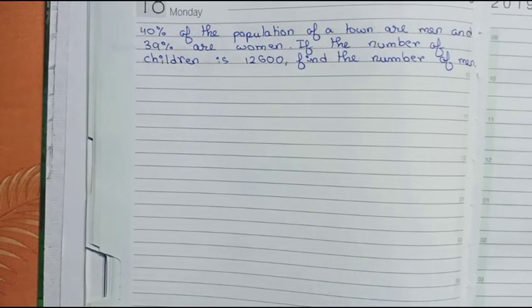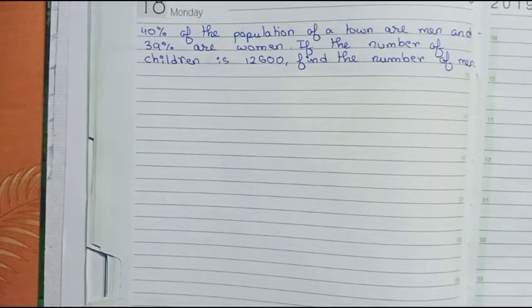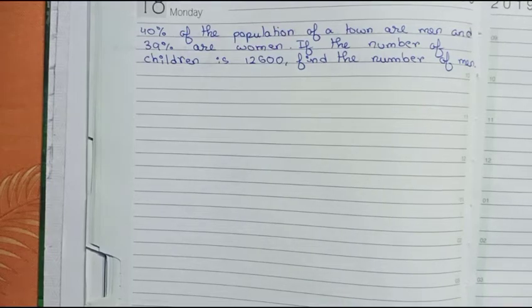Hello guys, welcome to this video. In this video our question is: 40% of the population of a town are men and 39% are women. If the number of children is 12600, find the number of men. So this is our question and I'll start.